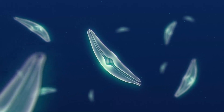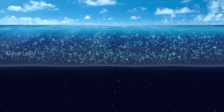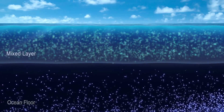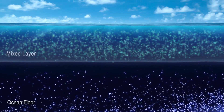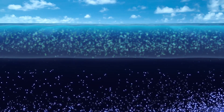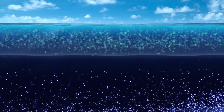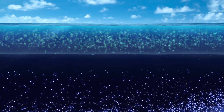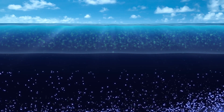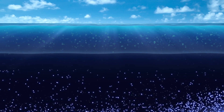Diatoms occupy the surface area of the ocean called the mixed layer. Nutrients collect on the ocean floor and are cycled up to this layer. Various physical forces can cause the depth of the mixed layer to become shallower so that fewer nutrients reach the diatoms. Without these nutrients, their populations decline.